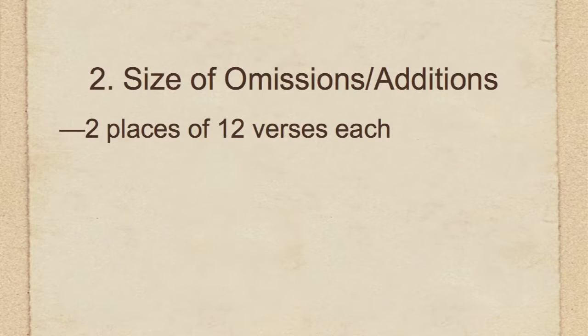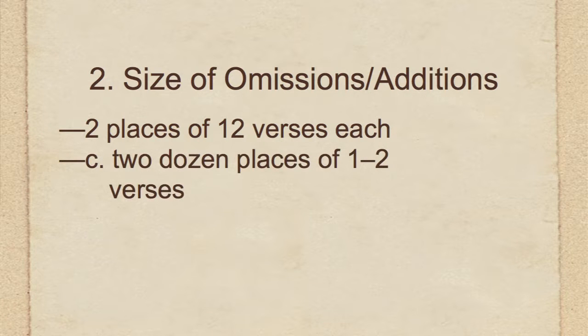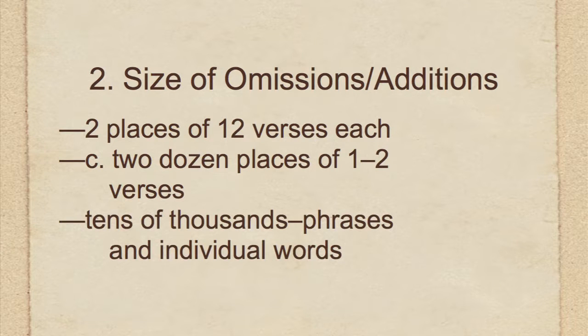Apart from those two places of twelve verses, the next largest textual variant found in English translation — the kind most Bible students know about through translation — is only two verses long. We have some that are one verse, so only a couple dozen or so that are one or two verses. After that, we have phrases, clauses, and individual words, and that number is in the tens of thousands, if not more, of omissions or additions at that level.